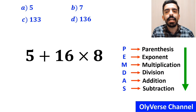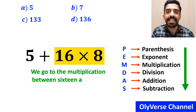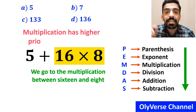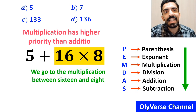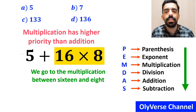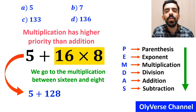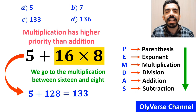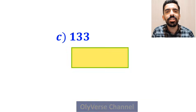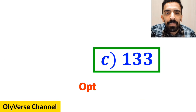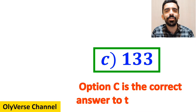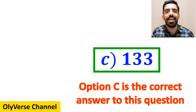In the next step, we go to the multiplication between 16 and 8, because multiplication has higher priority than addition. So, this expression simplifies to 5 plus 128, which ultimately gives us the answer 133. Option C is the correct answer to this question.